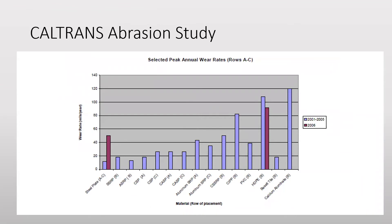Taking a closer look at the data, the blue graph depicts wear rate in millimeters recorded for each material type. It was found that during this five-year period, smooth wall steel plate recorded the lowest abrasive wear while pipe made with calcium aluminate had the highest. Steel plate is listed on the far left, and on the far right of the graph, calcium aluminate shows the greatest wear rate recorded in millimeters per year.